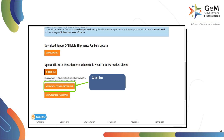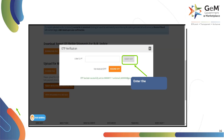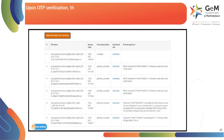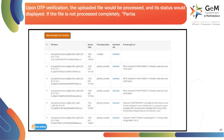Click on verify with OTP and process file to generate the OTP to further process the file. Enter the OTP and click on verify OTP. Upon OTP verification, the uploaded file would be processed and its status would be displayed. If the file is not processed completely, partially complete would appear under status and the reason will be mentioned under processing errors.